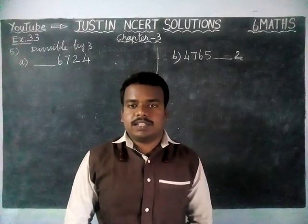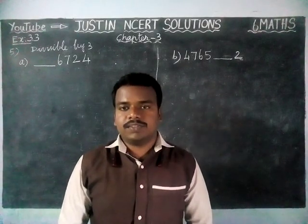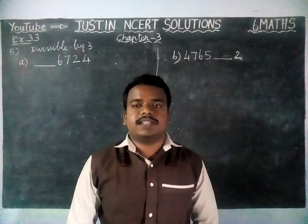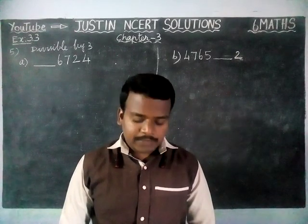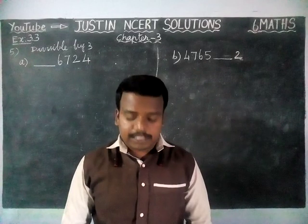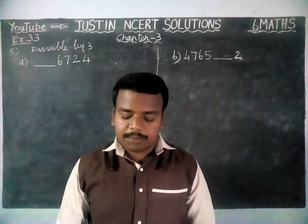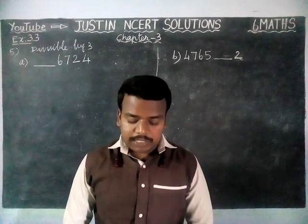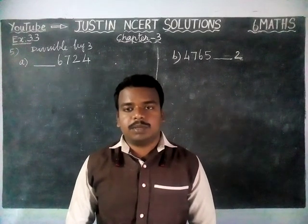Hi friends, welcome to Justine's NCRT Solutions. In this video, we are going to see Class 6 Maths Chapter 3 Exercise 3.3, 5th Question. The question is: write the smallest digit and the greatest digit in the blank space of each of the following numbers, so that the number formed is divisible by 3.